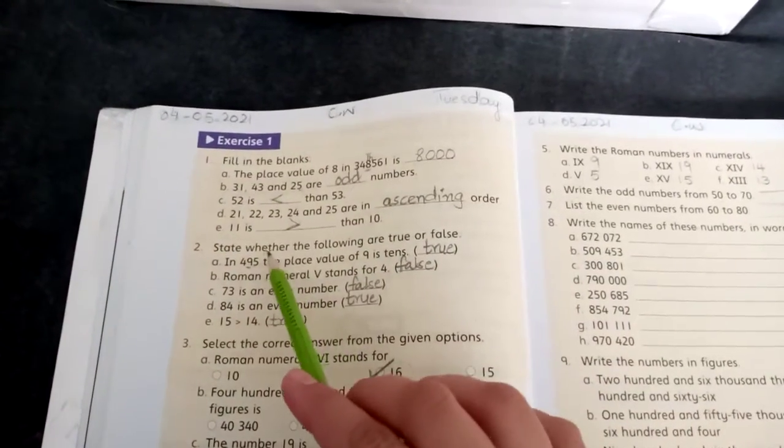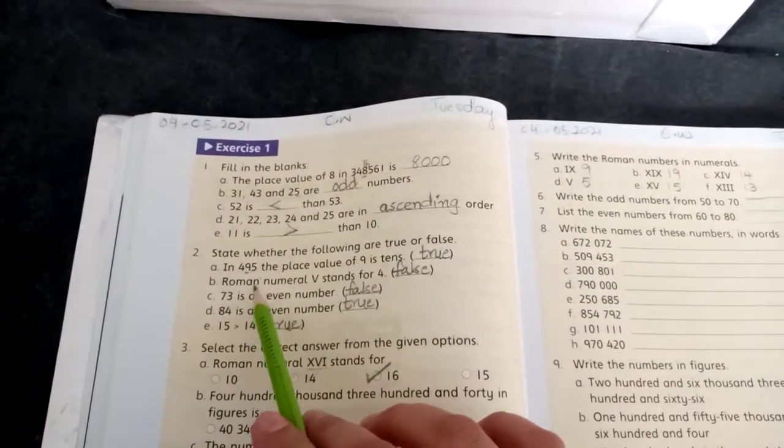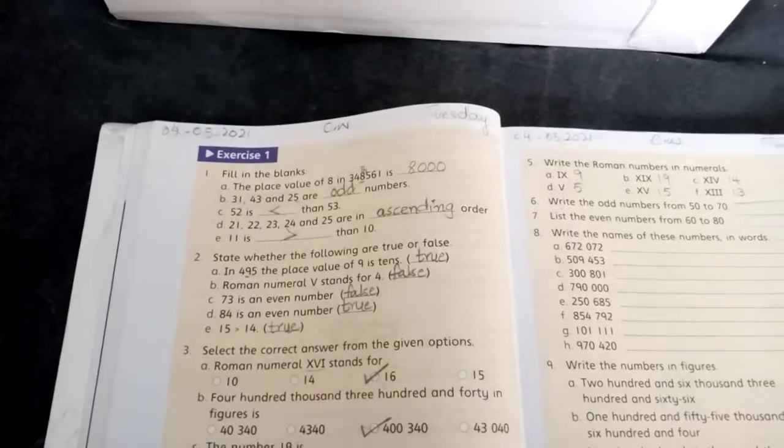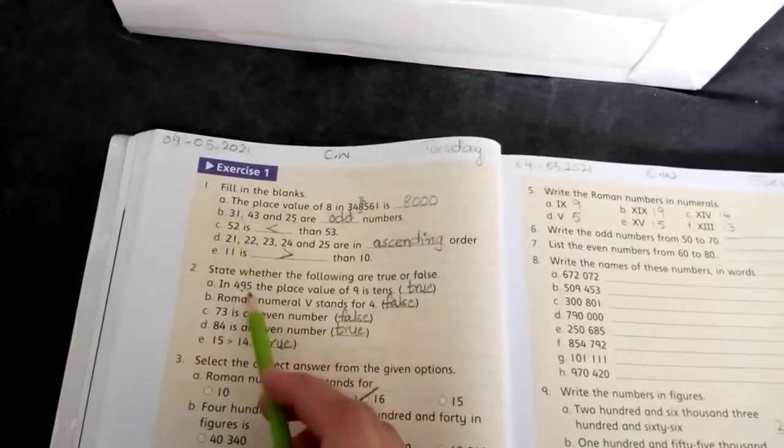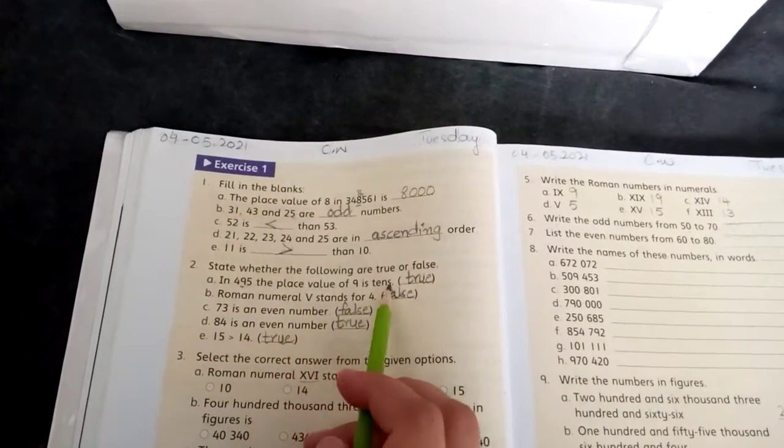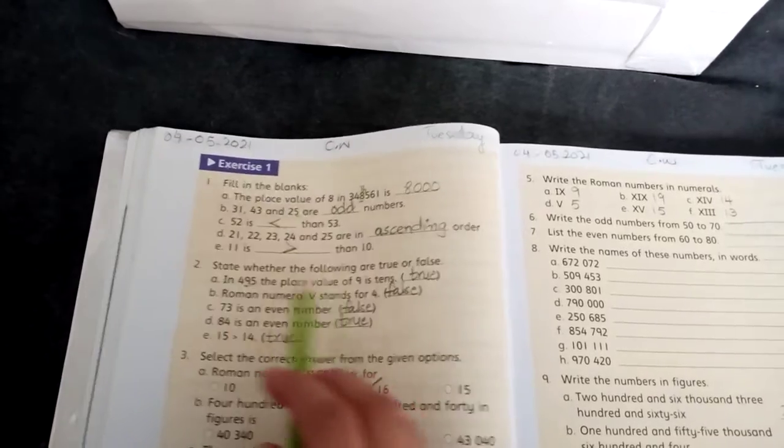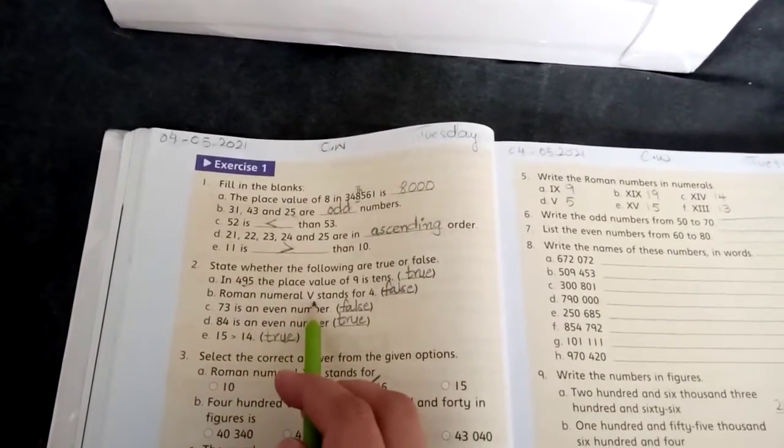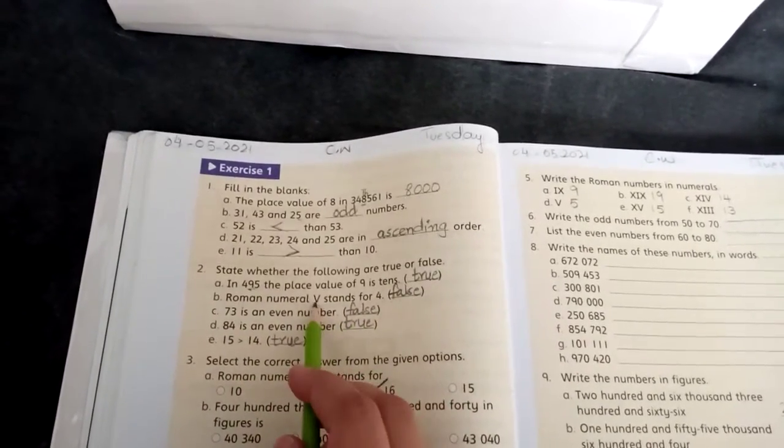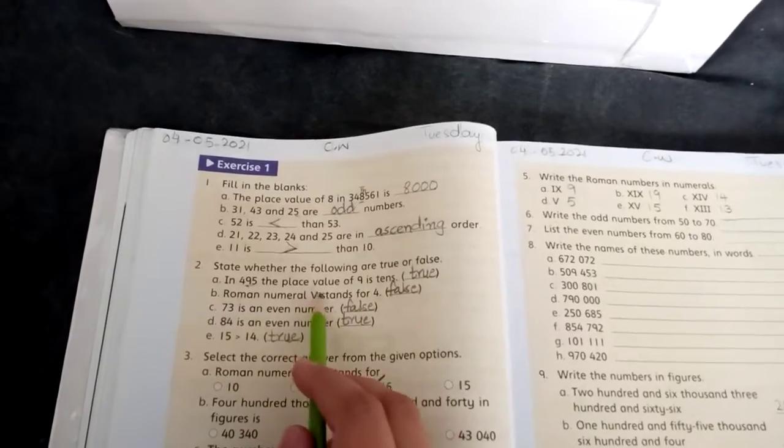Question 2 mein state whether the following are true or false. Thik hai, aap ne is tarah saari statements read kar leni hai. In 495 the place value of 9 is 10s. 10s pe hai, hai, to ye sahi hai, true. Roman numeral V stands for 4. V 4 ke liye hota hai? No, it's 5. Thik hai, ye 5 ke liye hota hai, thus so this is false.